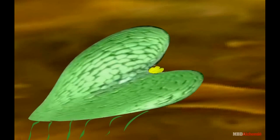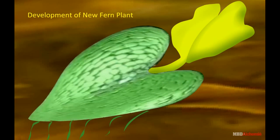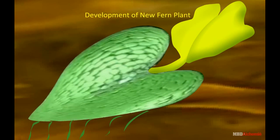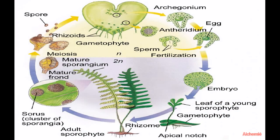However, with the development of green leaf and root, and with the decay of the prothallus, the sporophyte develops into an independent plant body.